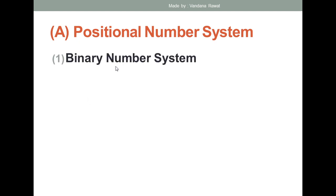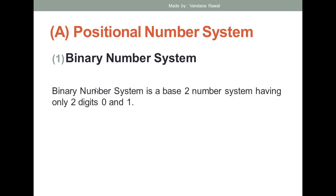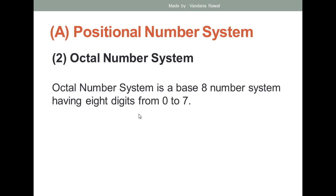The first type of positional number system is the binary number system. In case of binary number system, this type of number system has only two digits: zero and one. So in binary number system only two digits are used — zero and one. For example, a binary number can be like 11011 or 101011. These are some examples of the binary number system.